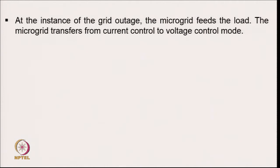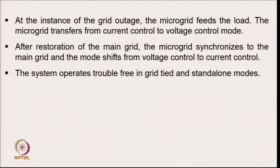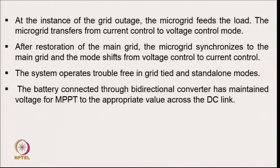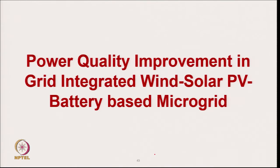At the instance of grid outage, the microgrid feeds the load and transfers from current control to voltage control mode. After restoration of the main grid, the microgrid synchronizes to the main grid and shifts from voltage control mode to current control mode. The system operates trouble-free in both grid-tied and standalone modes. The battery connected through a bi-directional converter maintains voltage for MPPT at an appropriate DC link voltage. Grid current THD and voltage THD have been observed less than 5 percent as per the IEEE 519 standard.